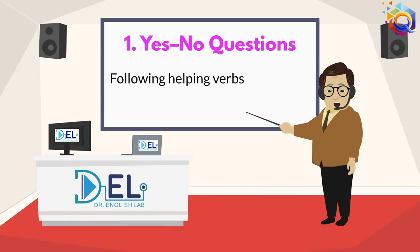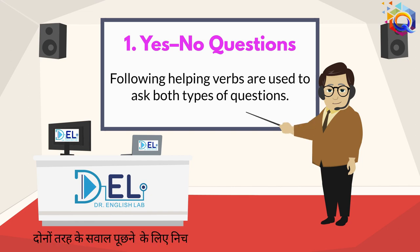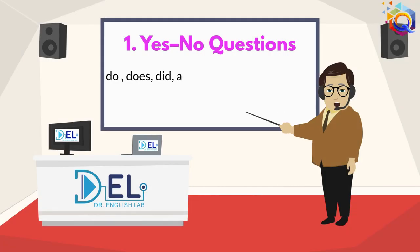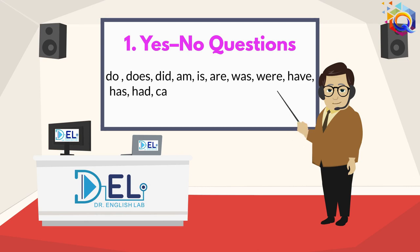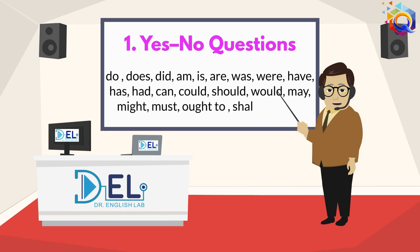The following helping verbs are used to ask both types of questions: do, does, did, am, is, are, was, were, have, has, had, can, could, should, would, may, might, must, ought to, shall, and will.